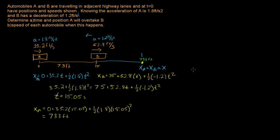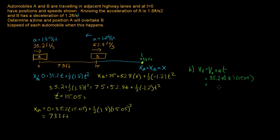To find the speed of each car at that moment, we use V_final equals V_initial plus acceleration times T. For car A: V_final equals 35.2 plus 1.8 times 15.05, which equals 62.3 feet per second. So the final velocity of car A when it overtakes car B is 62.3 feet per second.